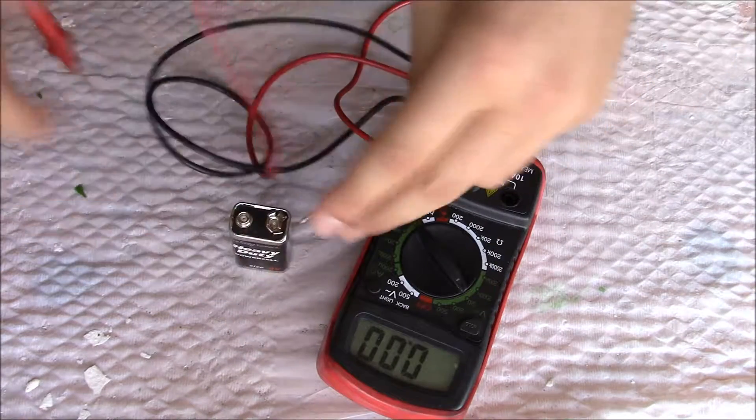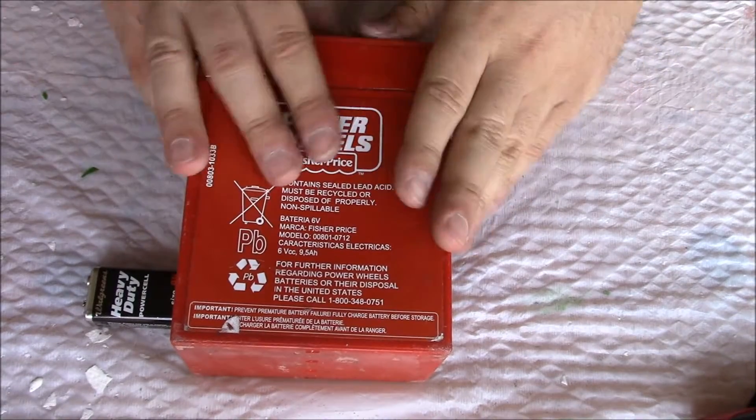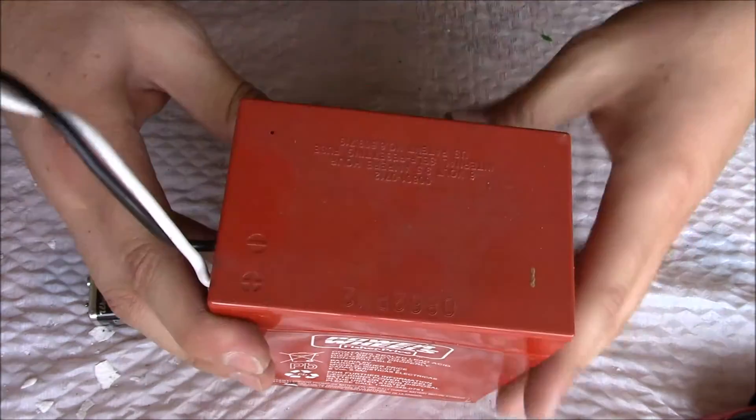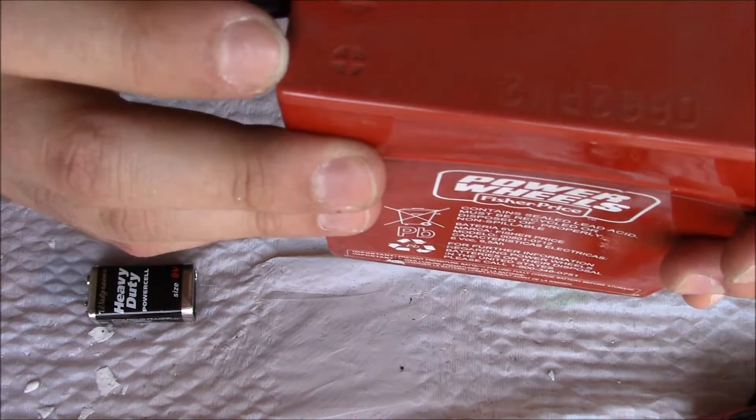I also have here a six volt rechargeable battery from a toy truck. Here it shows the white is positive and the black is negative. Black is almost always negative.